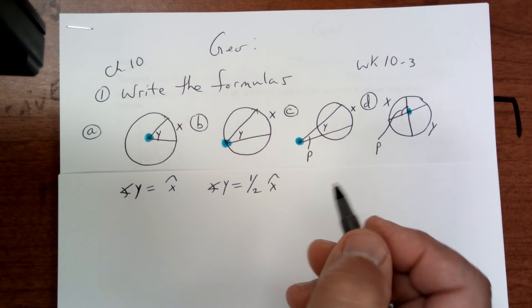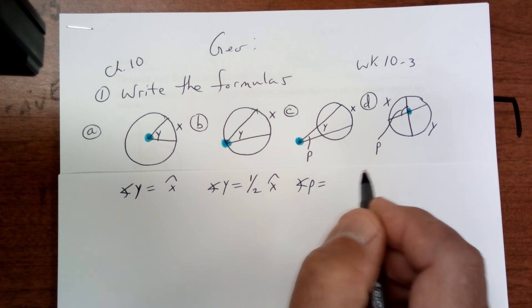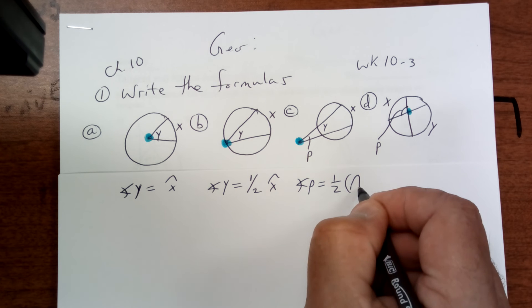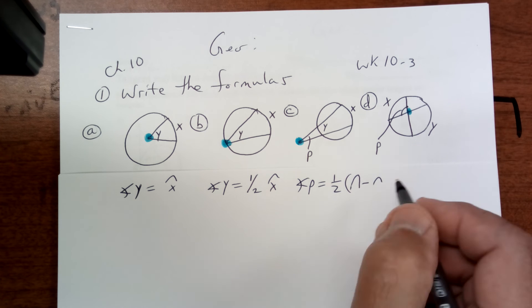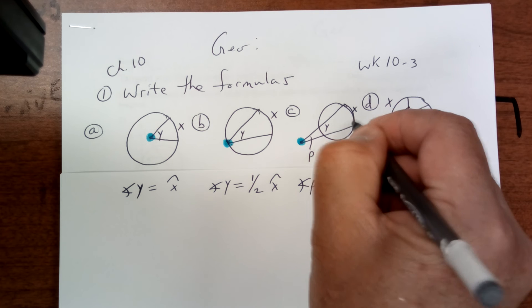This one is outside the circle, so angle P is equal to one half big arc minus little arc. Now, some people are like, that's an N. Nope. That stands for the arc. So write that down.